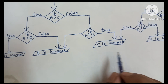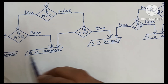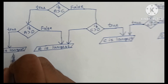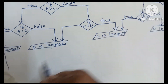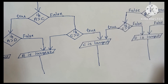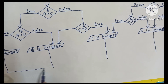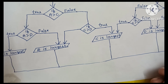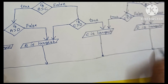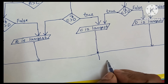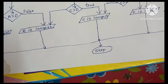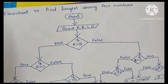All output values are written within a parallelogram shape. Comparisons are done within a diamond shape. Finally, we combine all outputs with a single line connecting to the stop statement.